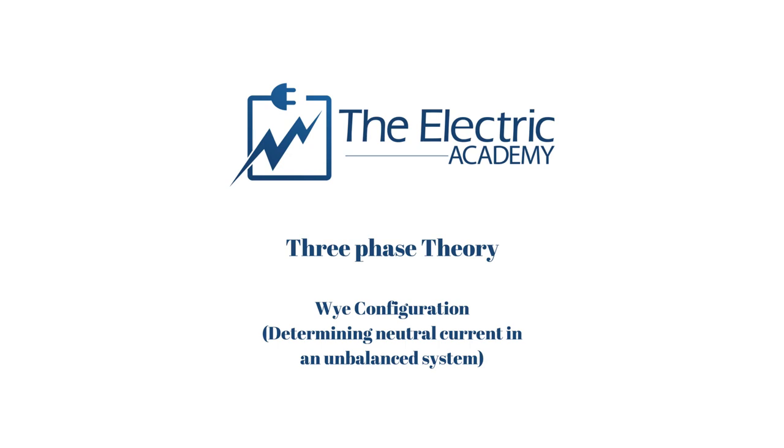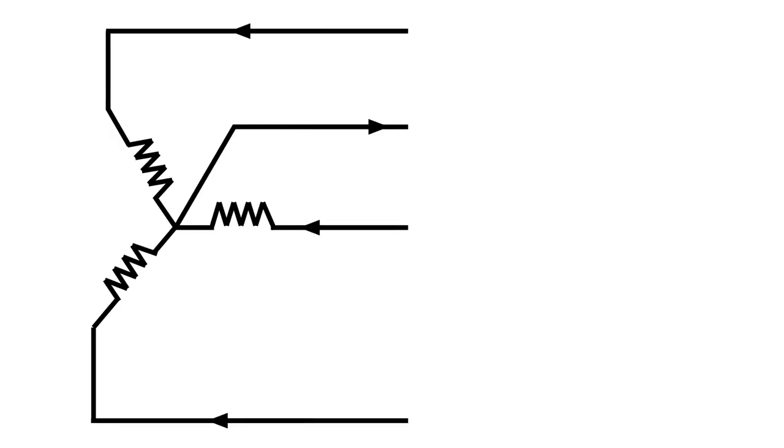Let's take a look. First things first, let's get our Y system or our delta system set up. So we've got our Y system. I've got three different phases and then I have a neutral, that star point we call it. That's the genius of the Y system. Then we're going to label them. We've got A phase, B phase, C phase, and as I said the neutral.